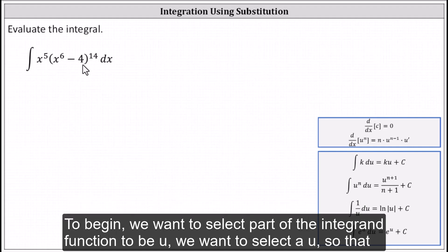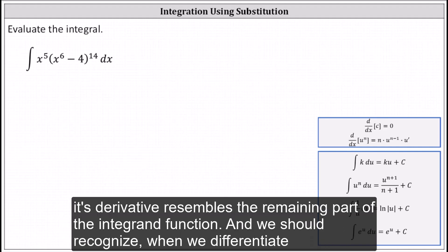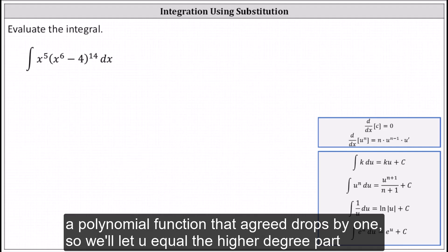To begin, we want to select part of the integrand function to be u. We want to select a u so that its derivative resembles the remaining part of the integrand function. And we should recognize when we differentiate a polynomial function, the degree drops by one.